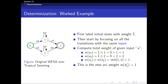Let's do a small example. Suppose you're given this weighted finite state acceptor over a tropical semi-ring. The first step is to initialize the initial node with the multiplicative identity, which in the tropical semi-ring is zero. Then we compute the total weight for a given input — here, input 'a'. The weight of transition e1 is 1-bar times 1, which algebraically gives 1, and the weight of e2 is 1-bar times 2, which gives 2.